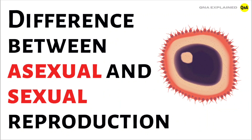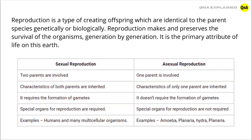Difference between sexual and asexual reproduction. Reproduction is a type of creating offspring which are identical to the parent species genetically or biologically. Reproduction makes and preserves the survival of the organism generation by generation. It is the primary attribute of life on this earth.